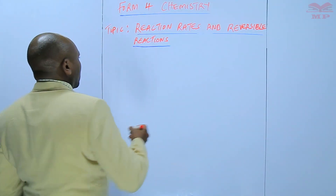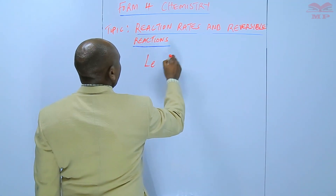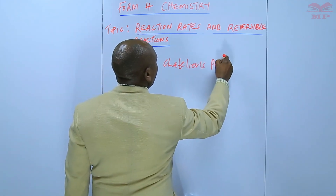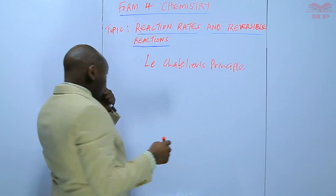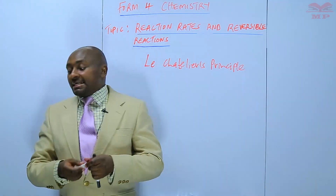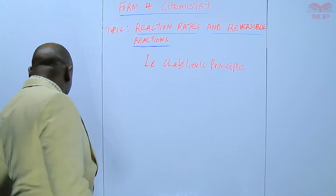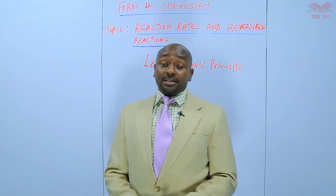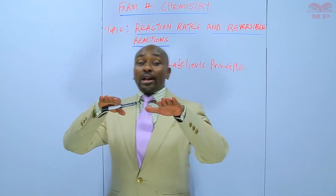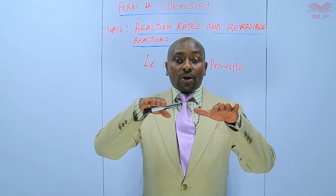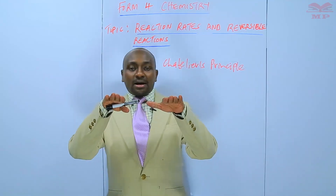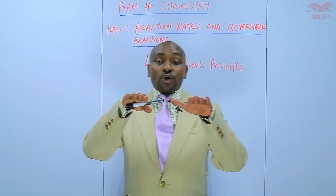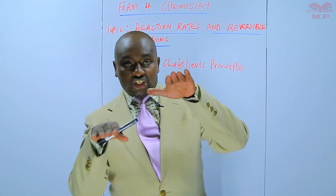Today we would like to discuss a certain principle called Le Chatelier's principle. Le Chatelier's principle tries to explain the factors that affect the equilibrium, and this principle states that when a system is in equilibrium, or when a change happens to a system that is in equilibrium, the system adjusts itself to try and oppose that change.